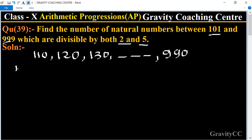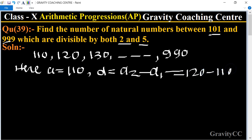So here, a equals 110, and d equals, its formula is second term minus first term, equals 120 minus 110, equals 10. Common difference is 10, and 990 is the nth term. Last term equals 990.